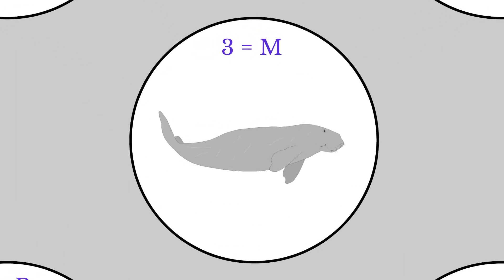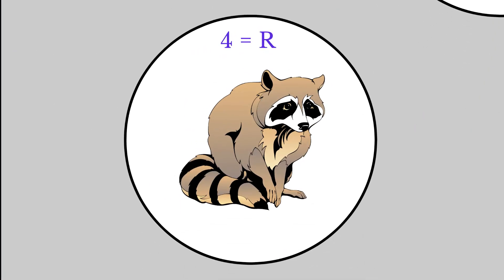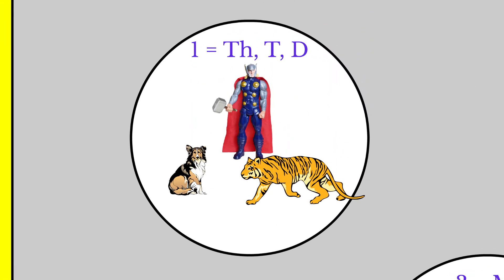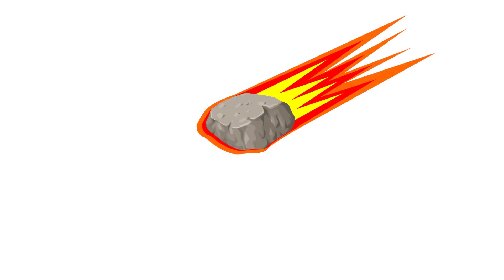3 is replaced by m, 1 by th, t, or d, 4 by r, and 1 by th, t, or d. So we can just think of a meteorite to remember these four digits. We need pi to calculate the circumference of a round meteorite.